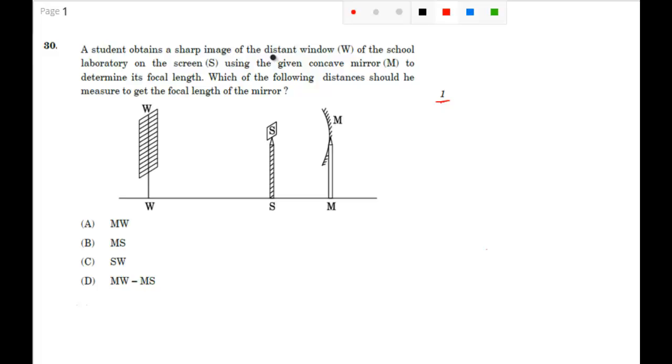A student obtains a sharp image of the distant window - this is very important - distant window of the school laboratory on the screen S. This is your screen S, using the given concave mirror to determine its focal length. Which of the following distances should be measured to get the focal length of the mirror?